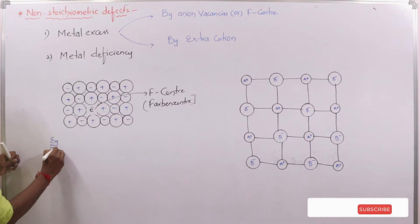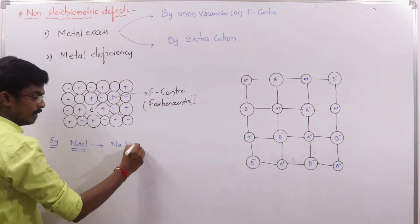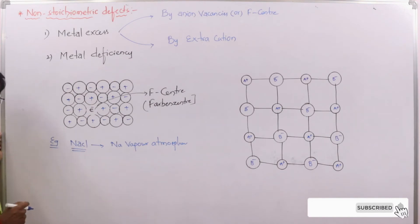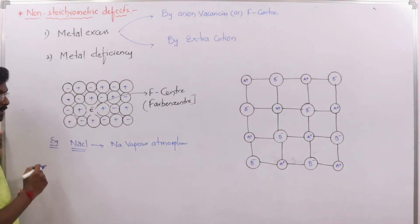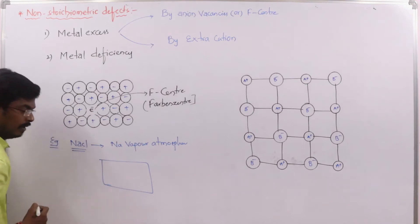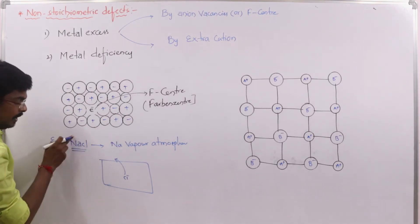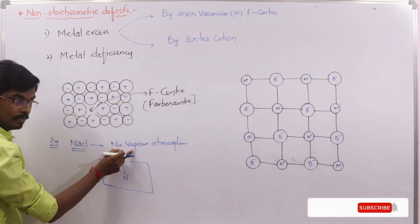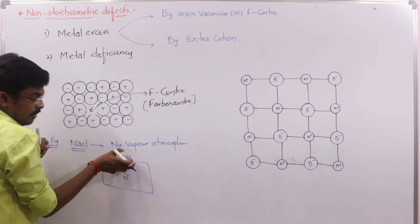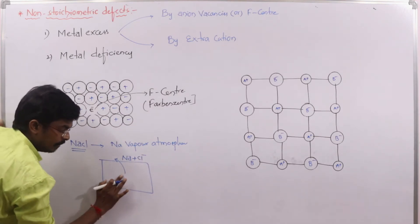For example, take NaCl. When NaCl crystal is heated in a sodium vapor atmosphere, anion vacancy takes place. The Cl⁻ ion diffuses out, and the excess sodium occupies the surface of the crystal. This excess sodium then causes the Cl⁻ ion to diffuse away, creating a vacancy.